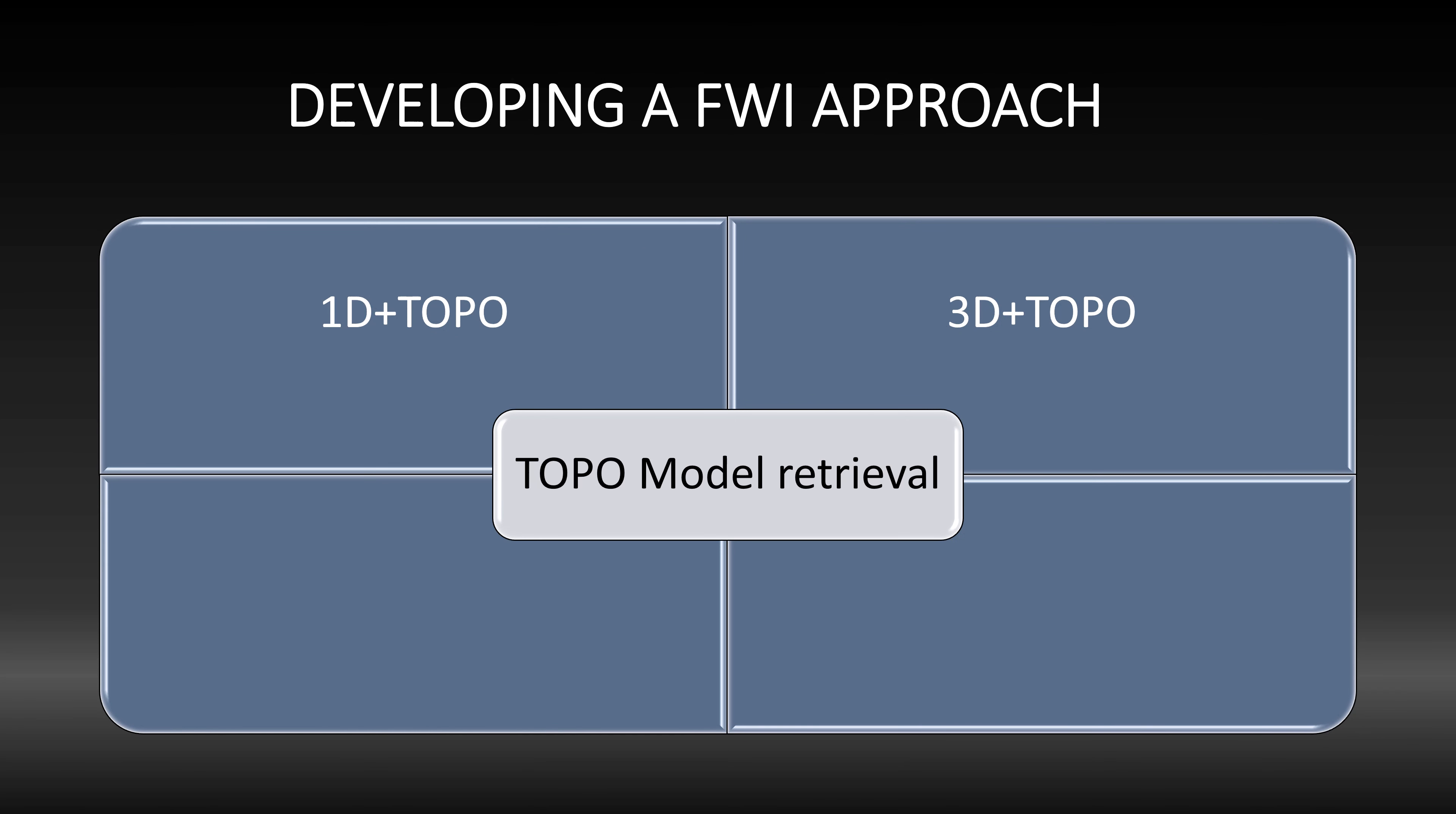So here is how we set up our experiments. The goal is to recover an added topography model. The use of spectral element modeling helps us add this model to a background Earth velocity structure. What we really want to know is what happens when we have a perfect or not so perfect knowledge of the velocity inside the mantle.